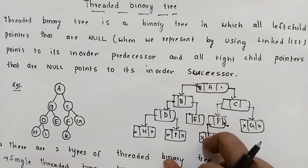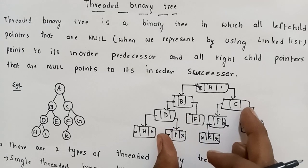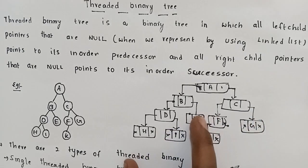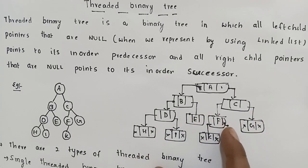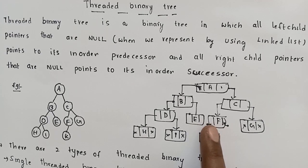This is the Linked List Representation. In the Linked List, we represent each node with a left child pointer, a right child pointer, and data. The null pointers in the right child place point to the in-order successor in the English representation.